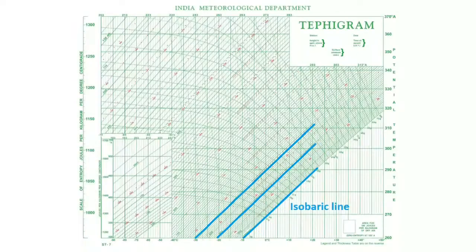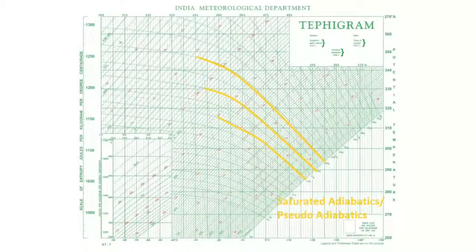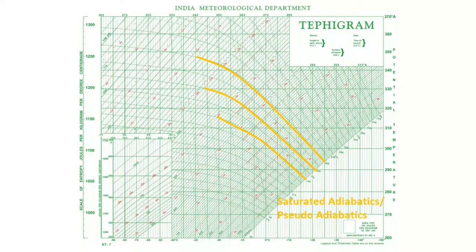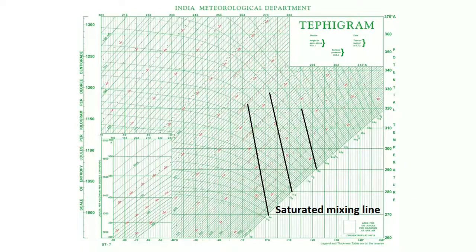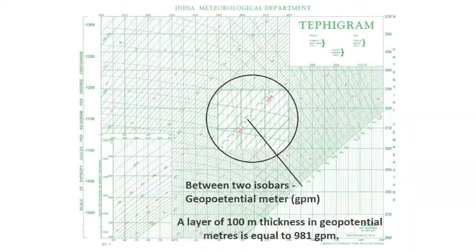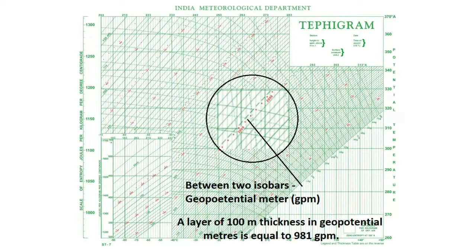Inclined lines show isobars in millibar units. Inclined curve lines show saturated adiabatics or pseudo-adiabatics. Dotted inclined lines show saturated mixing lines in grams per kilogram. The thickness of the layers between successive isobaric lines is given at the middle of each layer in geopotential meters.